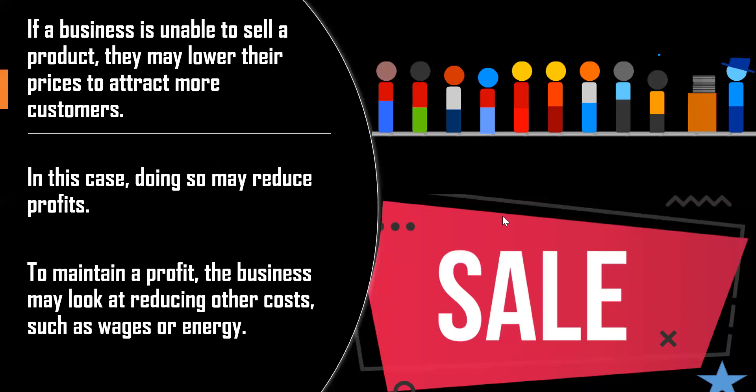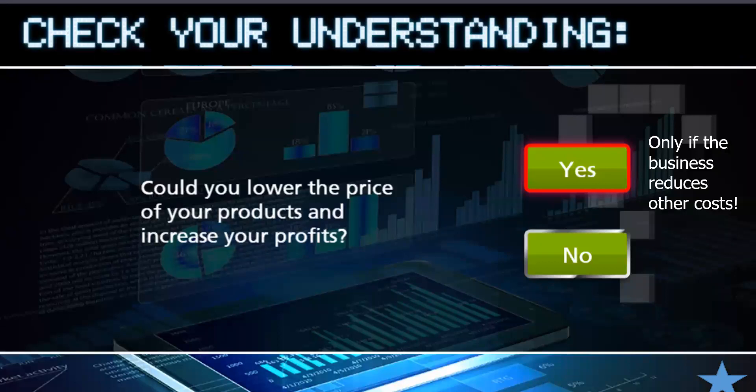If a business is unable to sell a product, they may lower their prices to attract more customers — that is why you see sales like 50% off, 25% discount, or buy two get one free. However, if you reduce your prices, you also reduce your profit. To maintain a profit, the business may look at reducing other costs such as wages, energy, or advertising. Could you lower the price of your products and increase your profits? Yes, but only if the business reduces other costs.